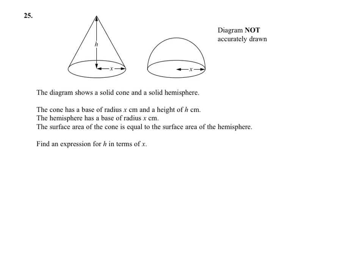We're told that the surface area of the cone is equal to the surface area of the hemisphere. So first we've got to work out formulas for the surface area of both our solids and calculate them in terms of h and x. We'll start with the cone.